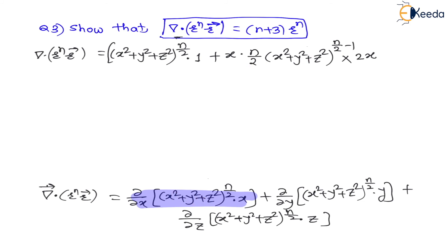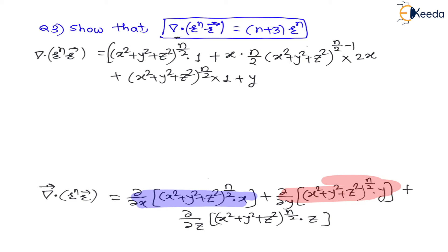For the second term similarly: (x²+y²+z²)^(n/2)·1 plus y·(n/2)·(x²+y²+z²)^(n/2 - 1)·2y. For the third term: (x²+y²+z²)^(n/2)·1 plus z·(n/2)·(x²+y²+z²)^(n/2 - 1)·2z.